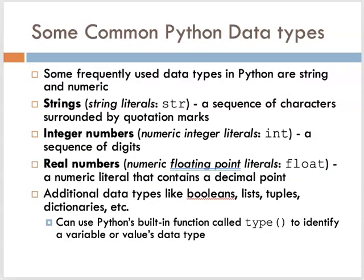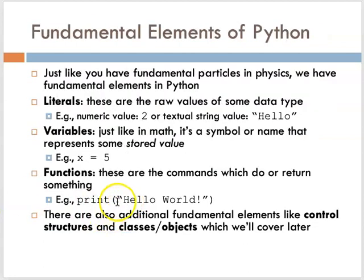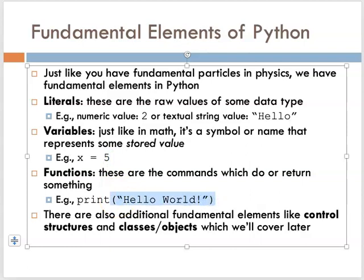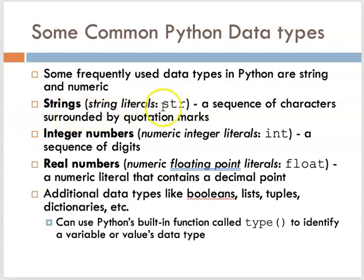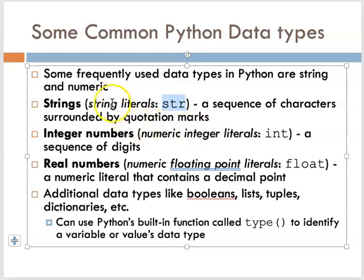Some common data types you might come across in Python are string values or string data types and numeric values or numeric data types. The string values are identified in Python as str — strings. These are string literals, a sequence of alphanumeric characters surrounded by quotation marks, either double or single quotes. Anytime you have alphanumeric characters inside quotation marks, Python treats that as a string data type and will do string processing on it, not numeric processing.